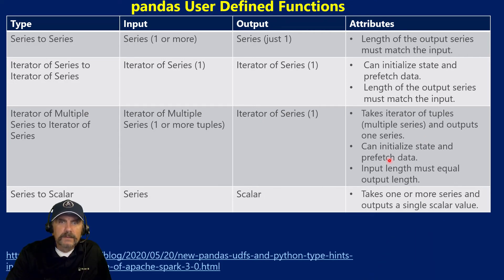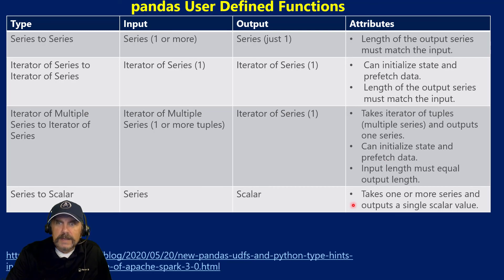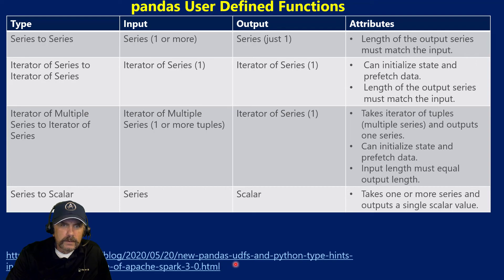Finally, we have series to scalar. Series to scalar takes in a pandas series but outputs a single value. So this could be something like taking a list of numbers in and returning a total — a single number. I did borrow information from a reference link, and I'll put a link in the description where you can get these slides.